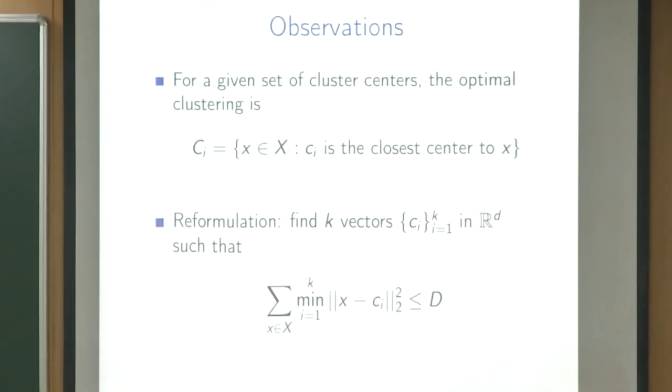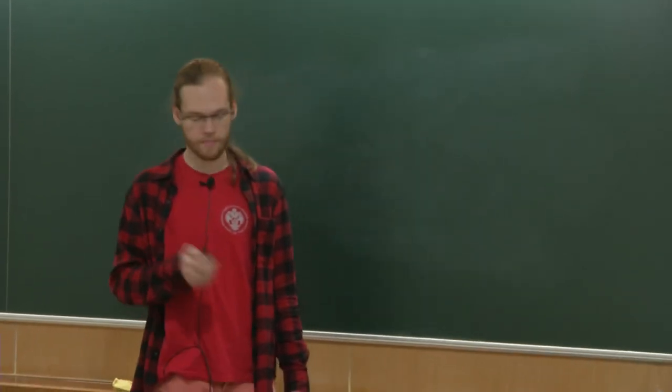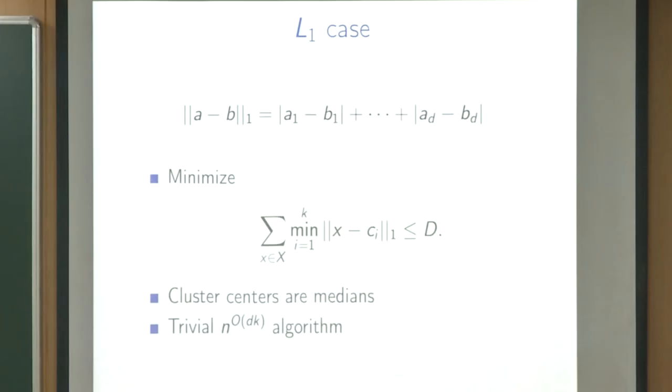So we can reformulate the problem: instead of asking for a partition into k sets and k cluster centers, we can simply ask: can we find k vectors such that the sum of distances from each point to its nearest center is at most D?